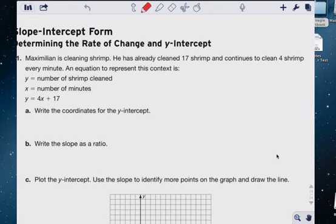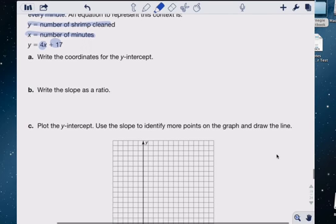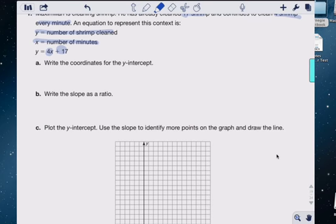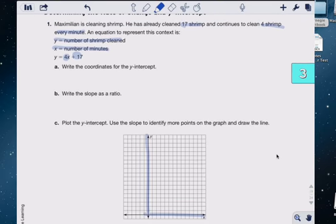Maximilian is cleaning shrimp. He already cleaned 17 shrimp and continues to clean four shrimp every minute. So that's four times the number of minutes. Start out with 17 if you noticed. Write an equation to represent this context. An equation to represent this context is, okay, they're saying Y is the number of shrimp cleaned, X is the number of minutes.